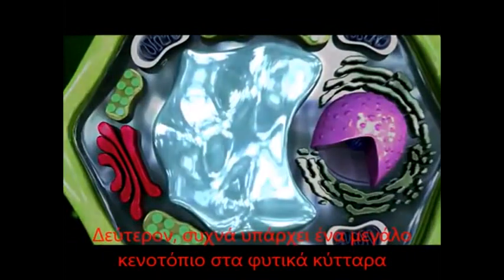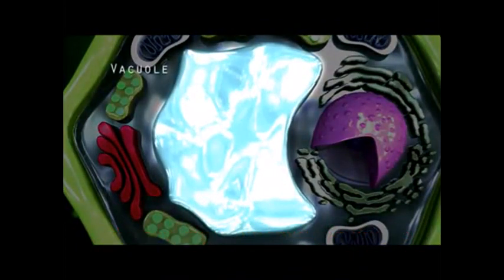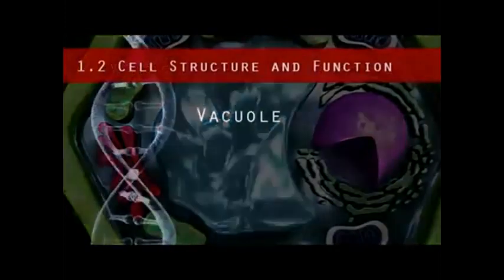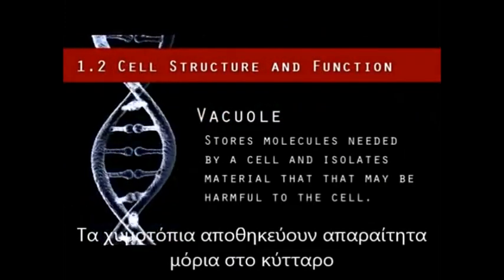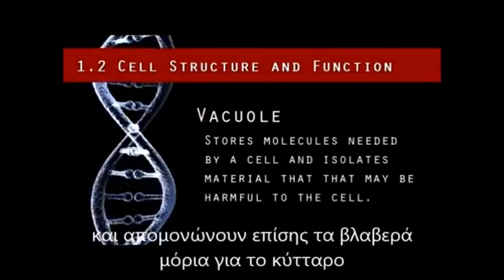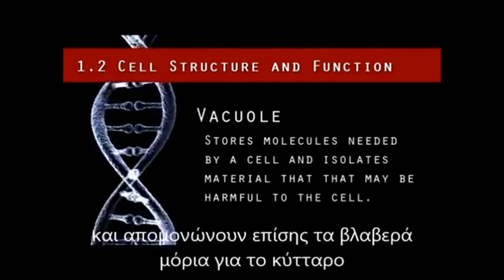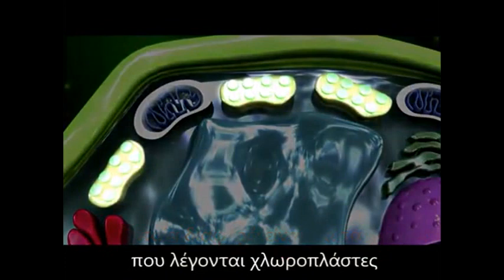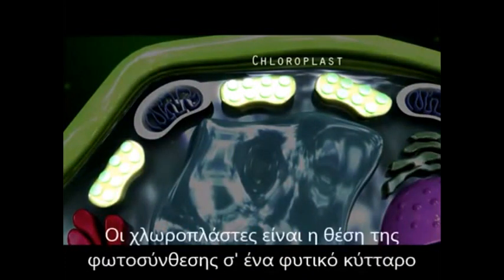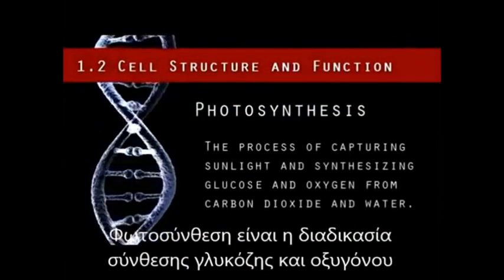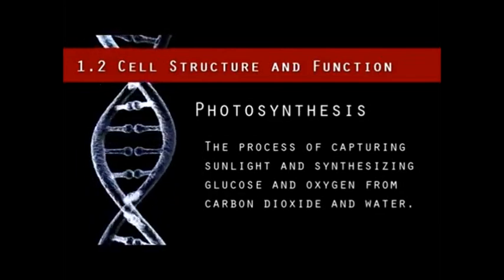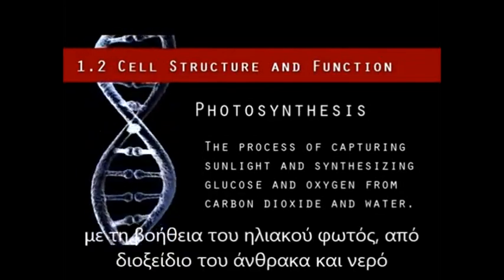Secondly, there is often just one large central vacuole found in plant cells, whereas animal cells have a few small ones. The vacuole stores molecules needed by a cell and also isolates material that may be harmful to the cell. The final difference is that plant cells have an additional organelle called a chloroplast. The chloroplast is the site of photosynthesis, which is the process of capturing sunlight and synthesizing glucose and oxygen from carbon dioxide and water.